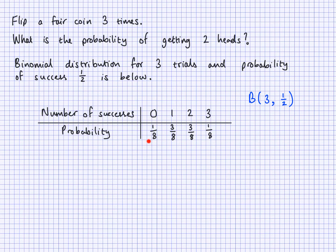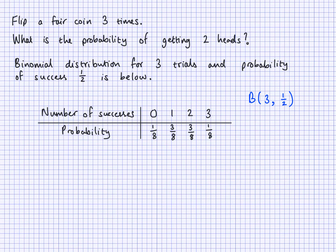Now the next thing I want to do is show exactly how we find these numbers. So I'm going to show you one more example and then I'll do it in general terms. For this example we are interested in two successes — getting two heads, where heads is success. Now if we get two heads, the other one must have been a tail. We don't care about the order when it comes to the binomial distribution — two heads in any order, and the other one must be a tail.